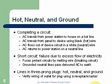A short circuit is a failure due to excessive flow of electricity — we usually get a circuit breaker that blows. Fuses protect circuits by melting a wire inside; that wire melts as it heats up with too much current, breaking the circuit. Grounded neutral lines pass detoured AC to earth, so if we do have a problem, we can pass the voltage back to earth.